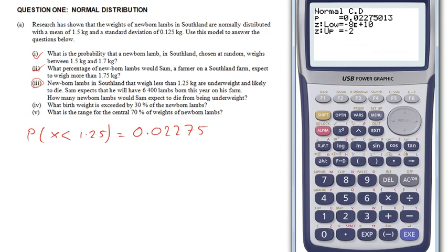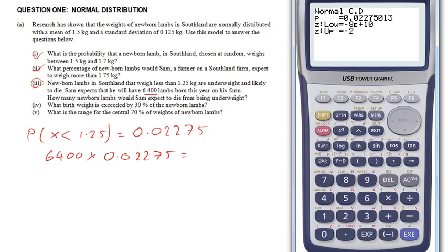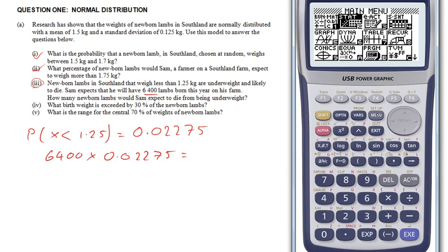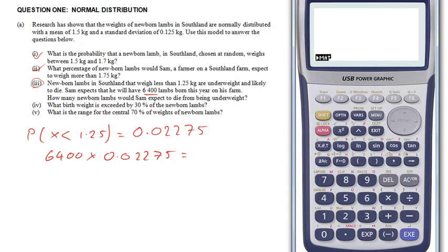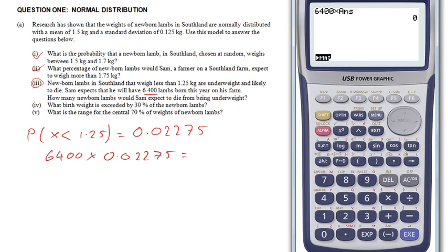So that's my probability. I know there's 6,400 lambs, so 6,400 times my probability tells me the number of lambs I expect to die. Now here's the nice thing: I worked out the answer, which was the probability. So if I go shift answer, it will transpose that entire probability, including all the decimal places, into my thing.